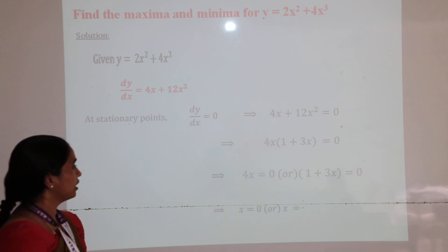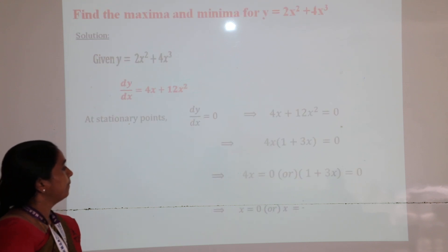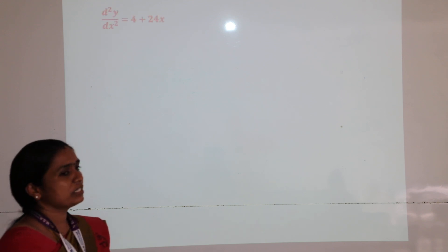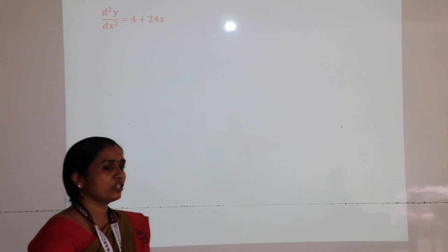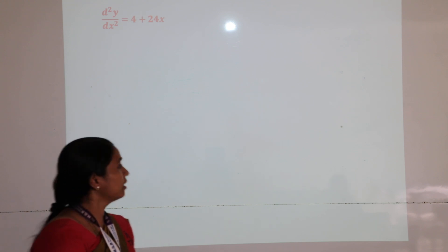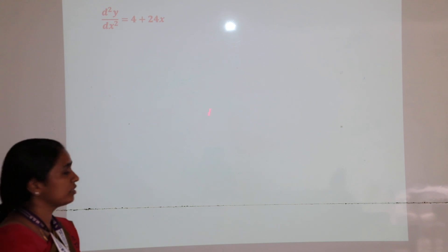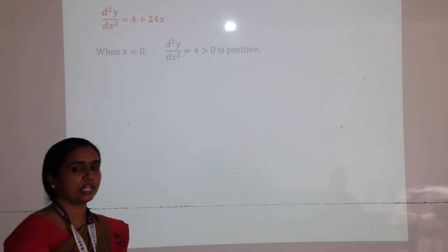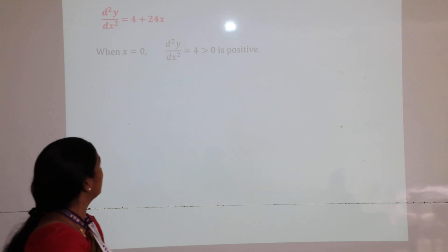So these are the two stationary points: x = 0 and x = −1/3. Next, we have to find the second derivative d²y/dx². We take the derivative of the derivative, which gives d²y/dx² = 4 + 24x. Now we are going to substitute the stationary points into d²y/dx².